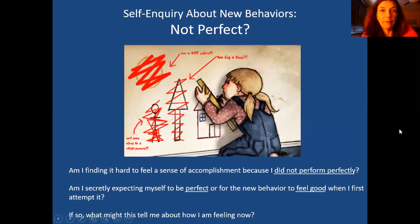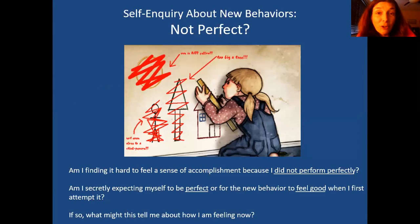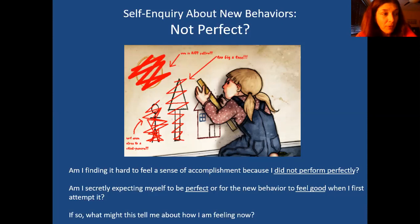Sometimes we might worry that this new thing we tried wasn't good enough or wasn't 'perfect.' Am I finding it hard to feel a sense of accomplishment because I didn't perform perfectly? For all the perfectionists out there — am I secretly expecting myself to be perfect for the new behavior to feel good on my first attempt? Is that a fair assessment? If so, what might this tell me about how I'm feeling right now? I might be feeling disappointed, ashamed, or anxious. Is it really fair to expect yourself to be perfect on the first try or even the tenth try?